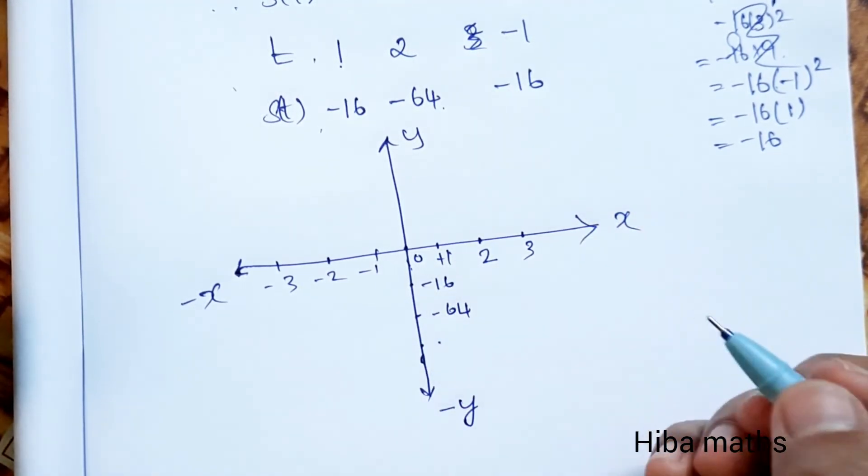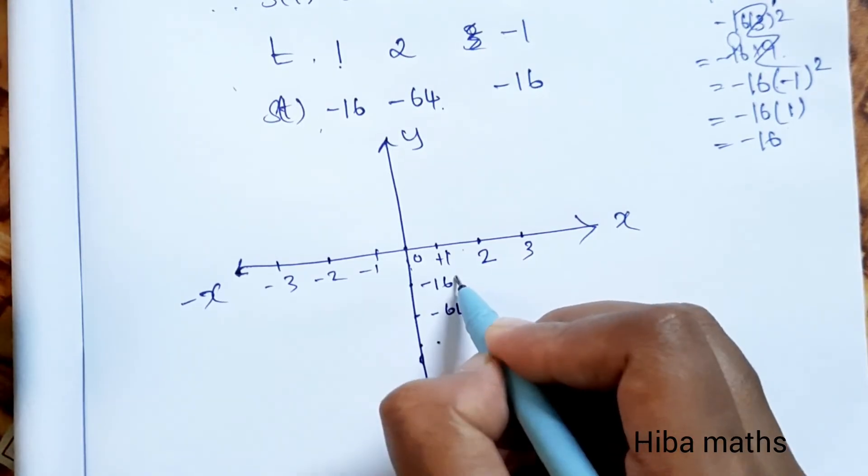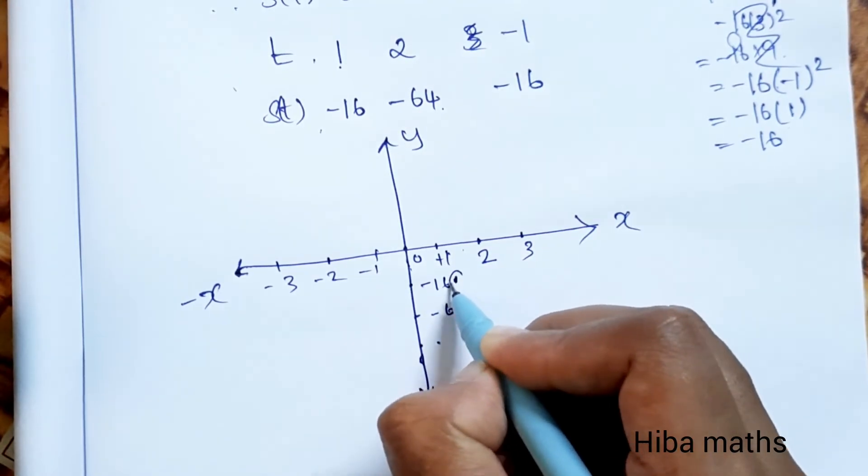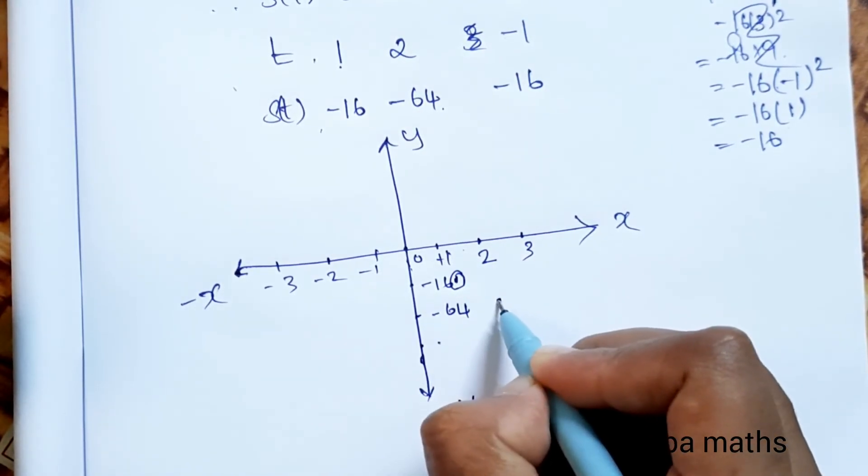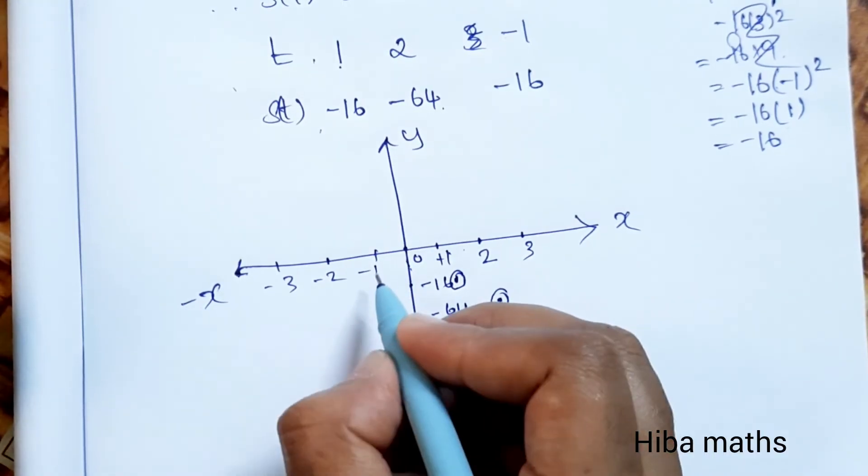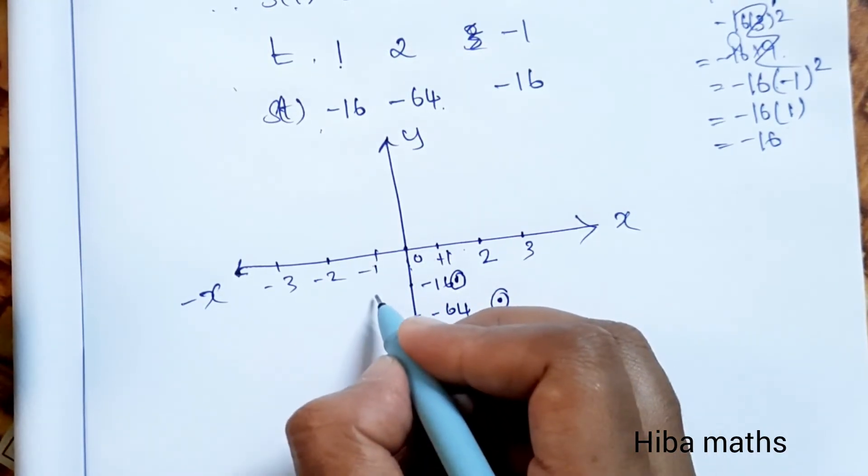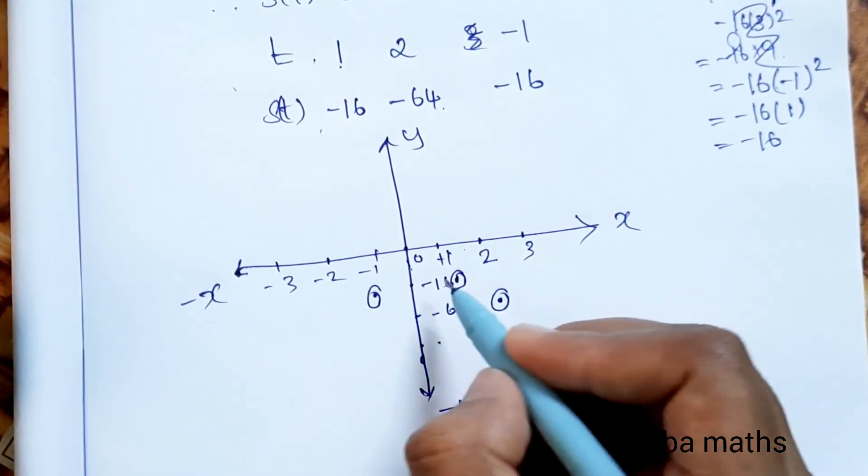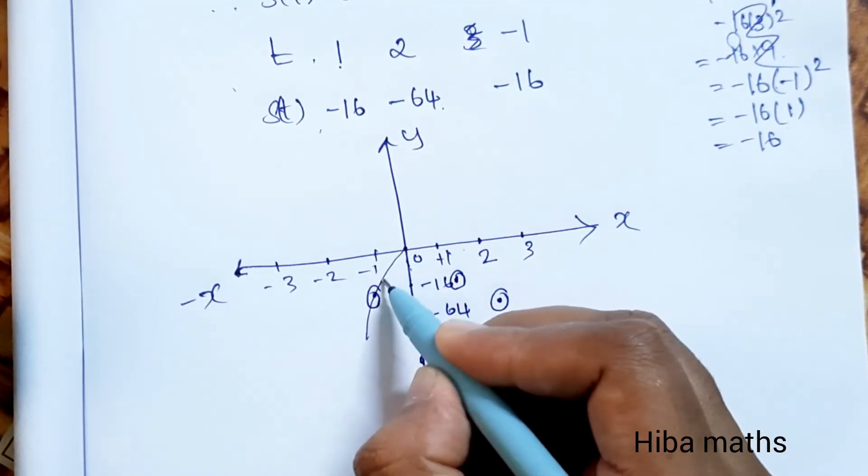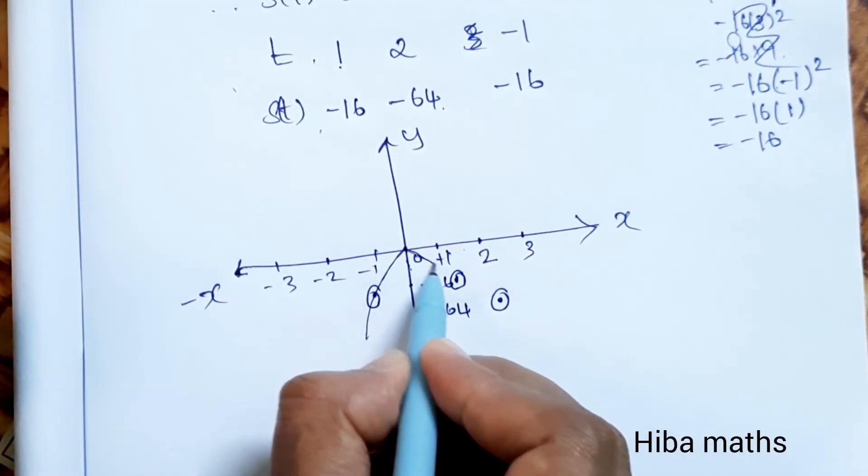Plotting the points: (1, -16), (2, -64), and (-1, -16). Drawing the curve through these points to form the parabola.